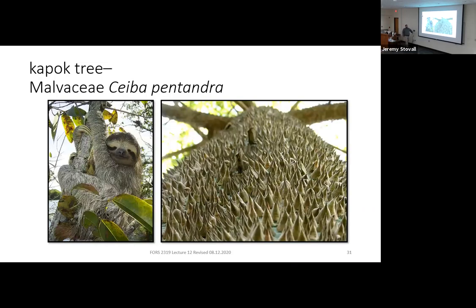No one is 100% sure why Kapok has that insanely aggressively prickly bark, but the leading theory is to avoid herbivory by sloths. Sloths are notoriously slow, which means they have a slow metabolism — half the animal may be undigested plant matter at any given time. Because they move so slowly, one or more sloths will get into a tree and essentially defoliate the whole tree before moving on. The theory is that these trees developed prickly trunks and branches to dissuade herbivory by sloths.